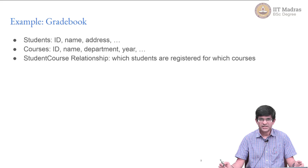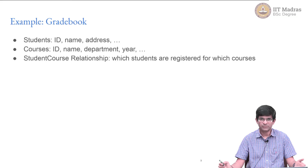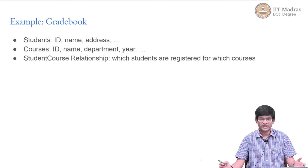As mentioned in the video on views, the running example that we will be using through the course is implementing a student gradebook. The kind of data we have in this gradebook is a list of students, for whom we will have information such as a unique ID number. Each student has a unique ID, and we will have a name for each student. The ID becomes important because it is entirely possible that two students could have the same name, but it is guaranteed that two students cannot have the same ID.